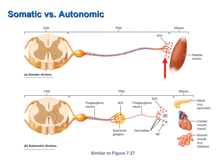In the autonomic division, we have a two motor neuron pathway. We have a preganglionic neuron in the central nervous system whose axon extends out into the peripheral nervous system to synapse with a postganglionic neuron. The axon of the postganglionic neuron then extends to the effector. The only exception is the motor pathway to the adrenal medulla of the adrenal gland, where there is a single motor neuron pathway.